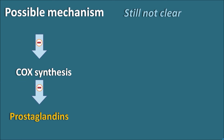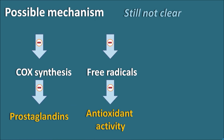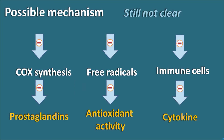Prostaglandins are important inflammatory mediators responsible for inflammatory reactions. The second proposed mechanism is that the active metabolites of sulfasalazine can inhibit free radicals, acting as free radical scavengers, showing antioxidant-like activity to decrease free radicals within the body. The third mechanism is that these metabolites can affect immune cells, thereby inhibiting the production of cytokines and other antibodies.